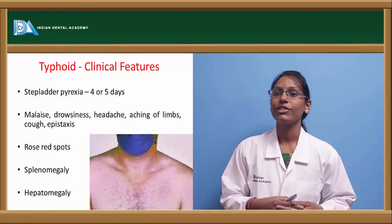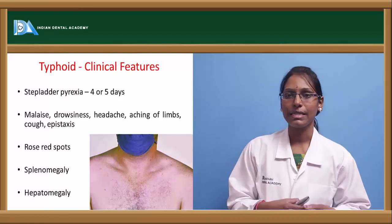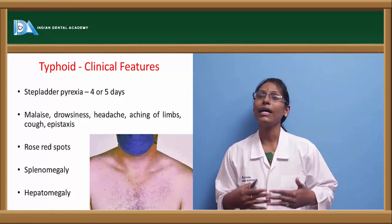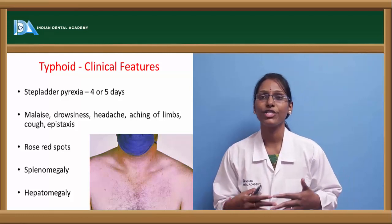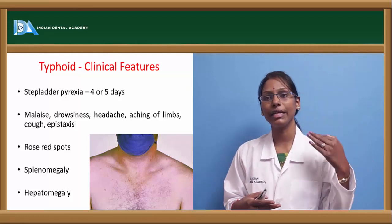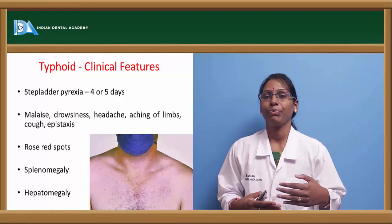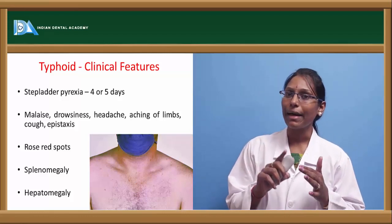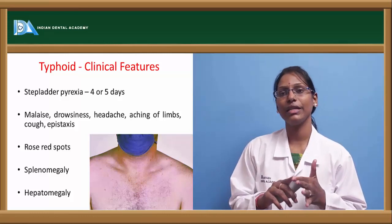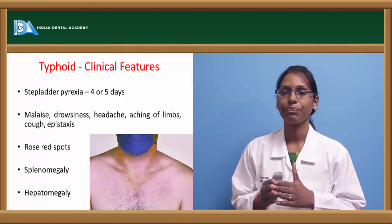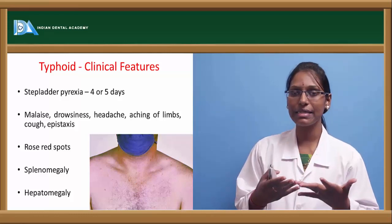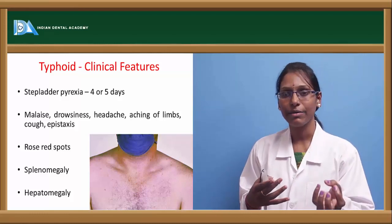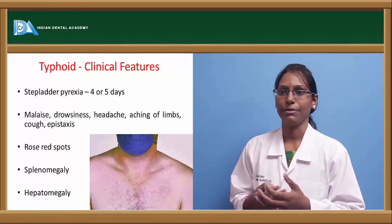Another characteristic feature which usually appears at the end of the first week is rose-red spots, seen usually in the upper abdomen region, the trunk, and sometimes at the nape of the neck and back. These rose-red spots usually fade on applying pressure, last for a few days, and are most easily identifiable on patients with white skin.